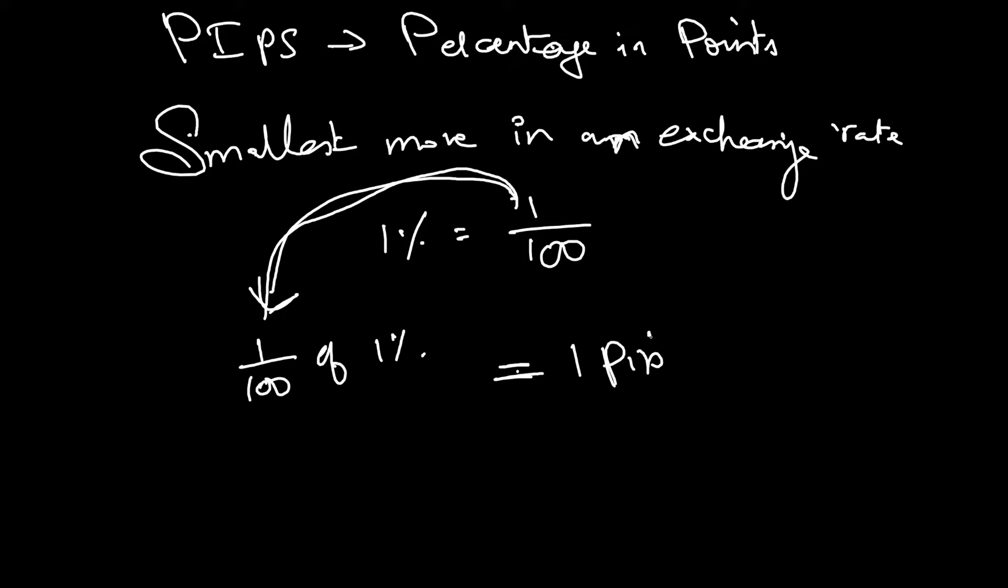So, it is one part of this 1 which is 1 hundredth of 1 percentage. PIP is the singular form and PIPs is the plural form. So, 1 PIP is equal to one hundredth of 1 percentage. That is equal to 1 by 100 into again 1 by 100.